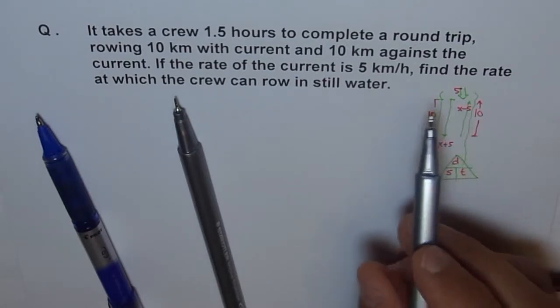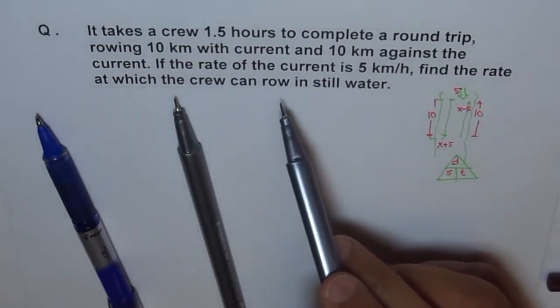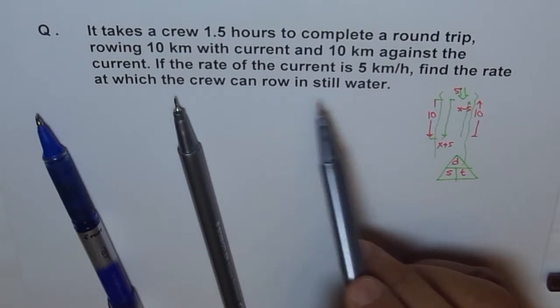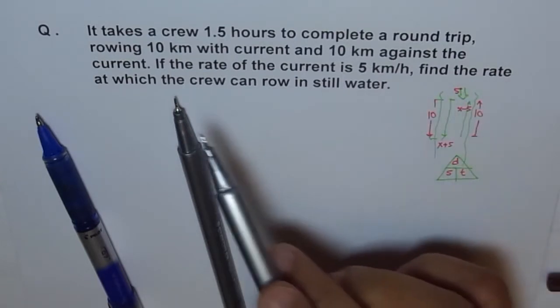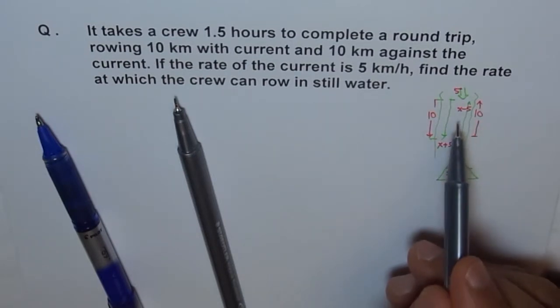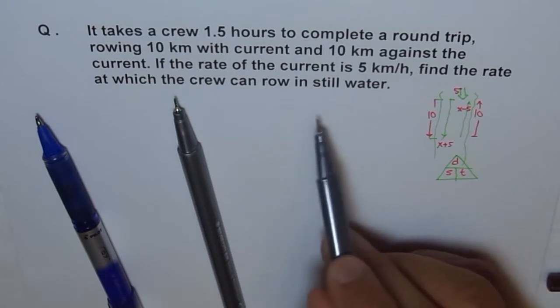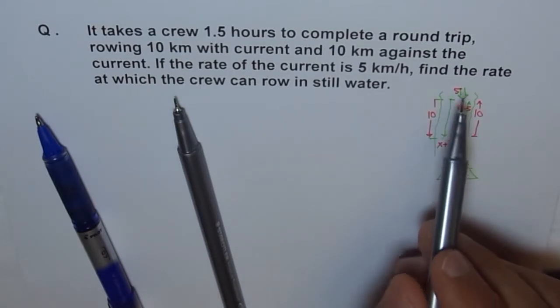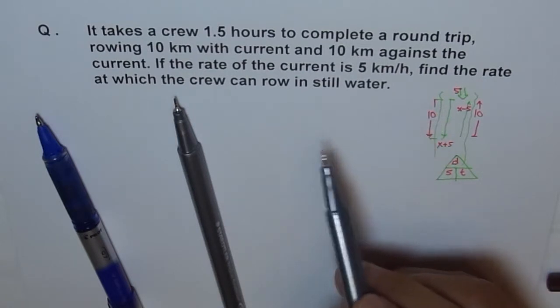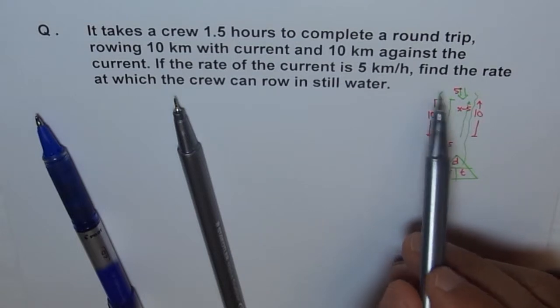And here, we are assuming that when they say find the rate at which the crew can draw in still water, then you should start from here. So, you say let the rate at which the crew can draw in still water is X. And that's how you define your variables. I'm not writing this, all this here, but I'm making you understand.